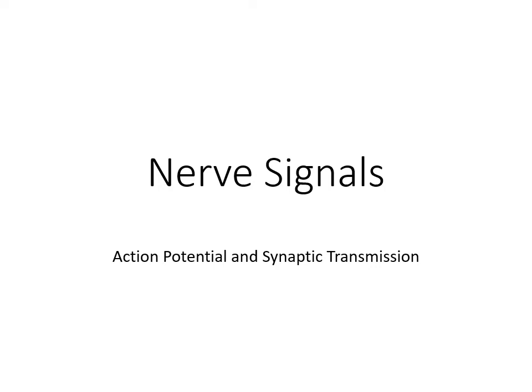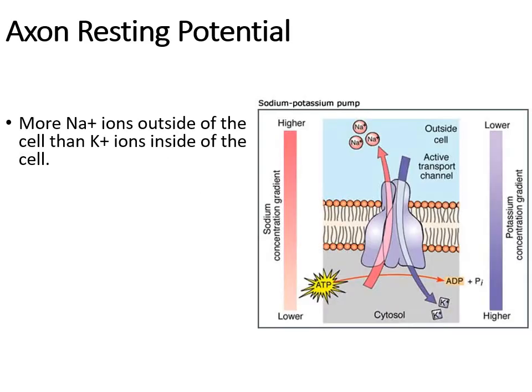Nerve signals — we're going to look at action potential and a brief mention on synaptic transmission. The axon resting potential is what the nerves are sitting at when they are not firing. Remember, the axon is the long body part of the nerve itself.